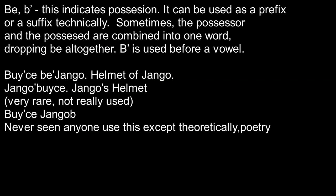Be, or b before a vowel, indicates possession. It can be used as a prefix, and technically it can also be used as a suffix. Sometimes the possessor and the possessed are combined into one compound word, dropping the be altogether. For example, we have buisha — but Django — meaning 'the helmet of Django.' Or we could combine it: Django buisha, meaning 'Django's helmet.' There's also a very rare form, seen mainly in poetry, where be is added as a suffix: buisha Django-bu. But no one uses that, so just don't use it unless you want to be creative.